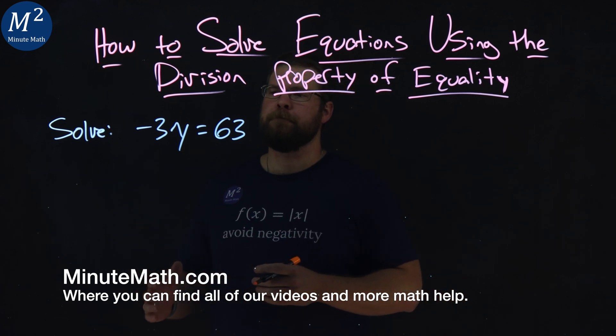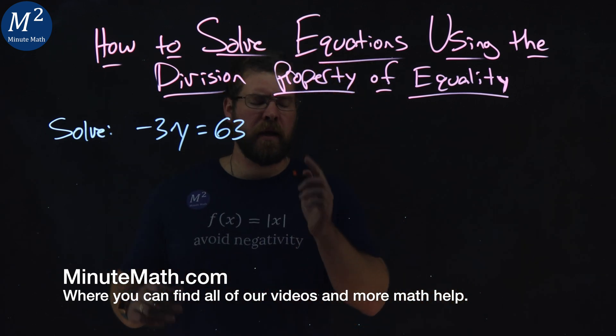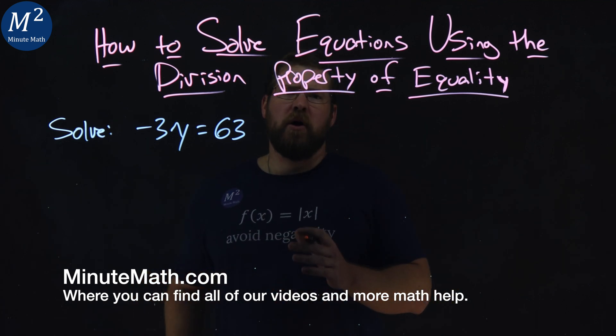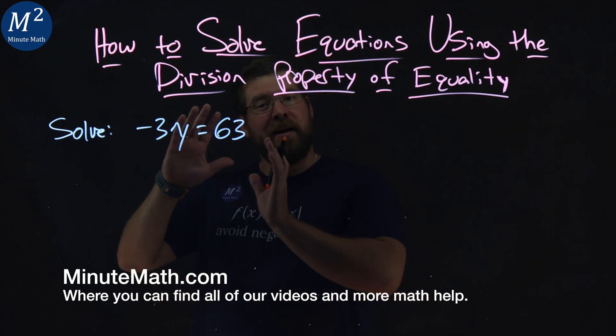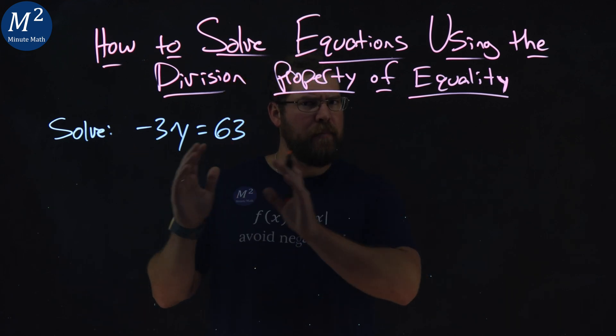We're given this problem here, negative 3y equals 63, and we've got to solve this. The division property of equality tells us that we can divide by the same number from one side of the equation and the other. We have to keep the same number though.